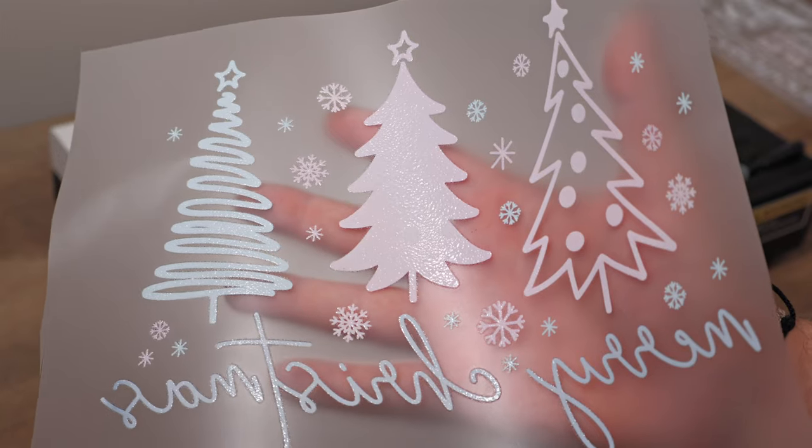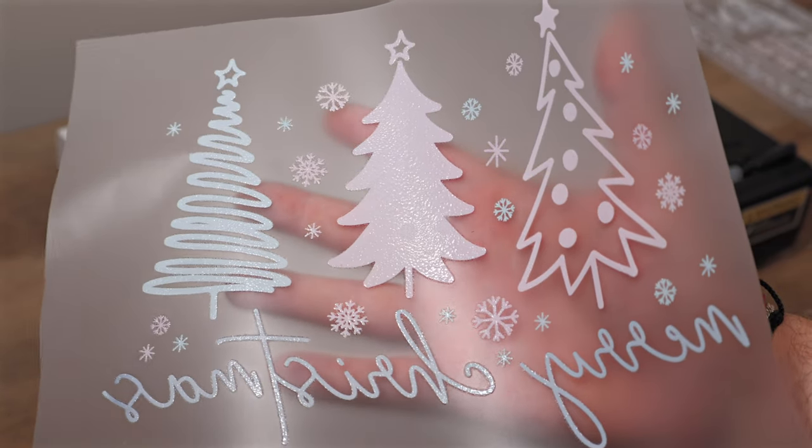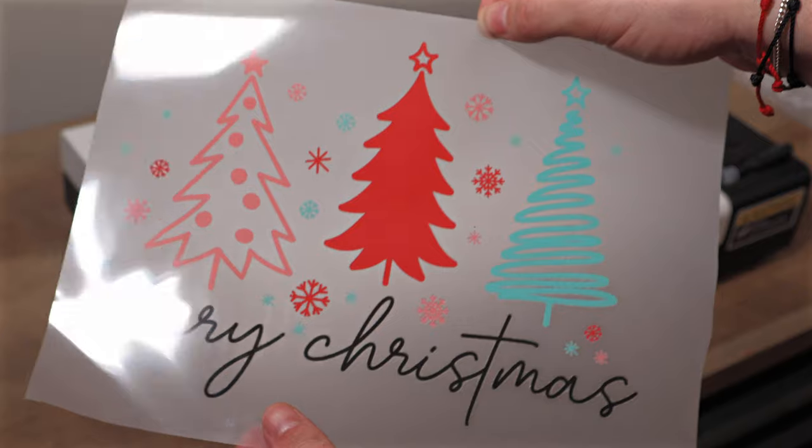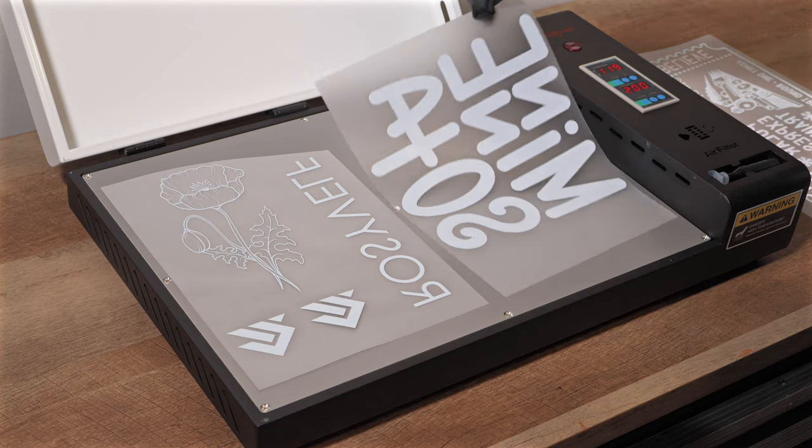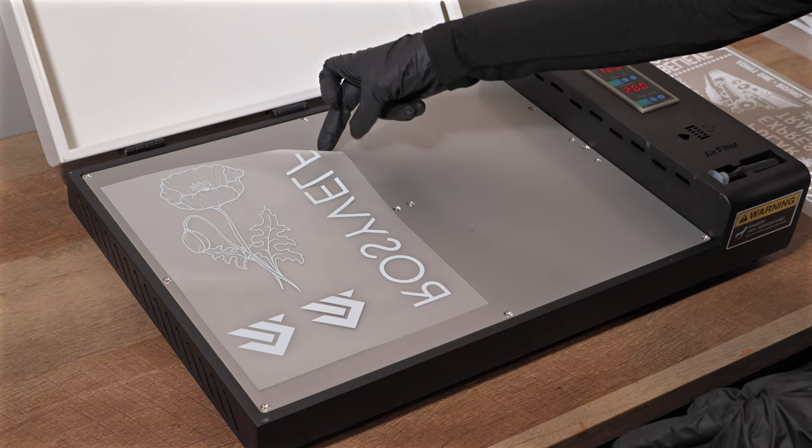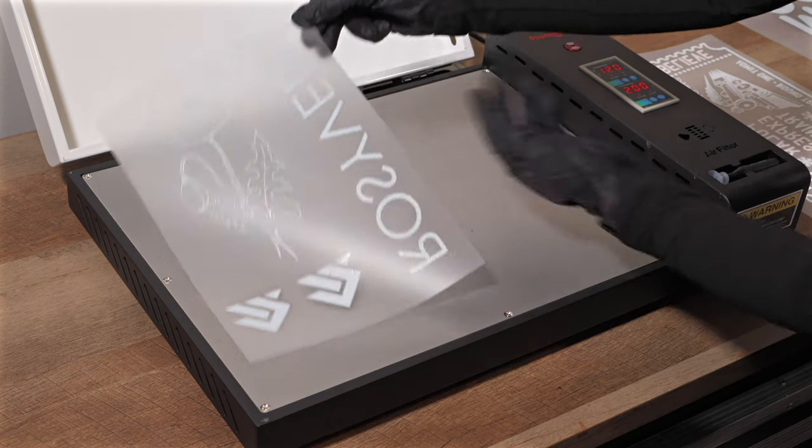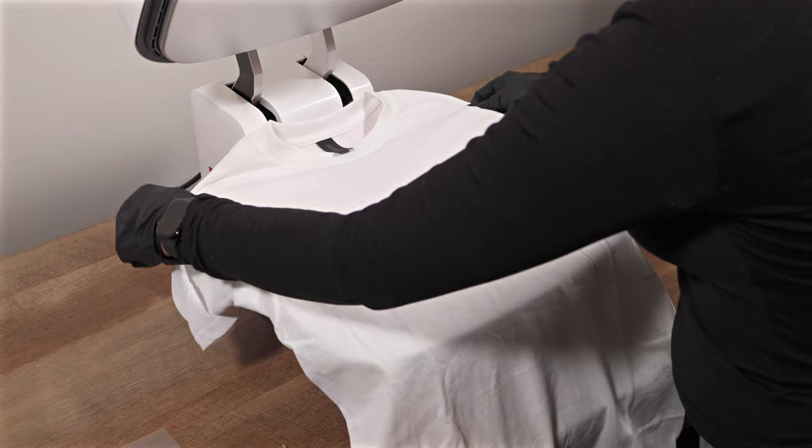Curing is a critical step in the DTF process, and it's easy to tell if you've done it correctly. Once the designs come out of the oven, the surface should have a subtle texture that resembles an orange peel. This texture indicates that the ink and adhesive have set properly.